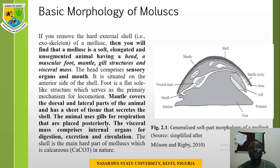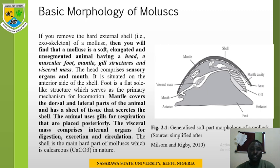In terms of basic morphology, if you remove the hard external shell of a Mollusca, then you will find that a Mollusca is a soft, elongated, and unsegmented animal having a head, a muscular foot, mantle, gill structures, and a visceral mass. The head comprises sensory organs and mouth, situated on the anterior side of the shell. The foot is a flat, sole-like structure which serves as the primary mechanism for locomotion. The mantle covers the dorsal and lateral parts of the animal and is a sheet of tissue that secretes the shell.